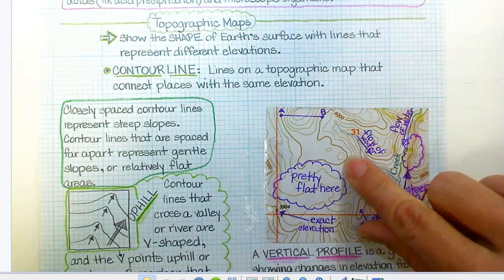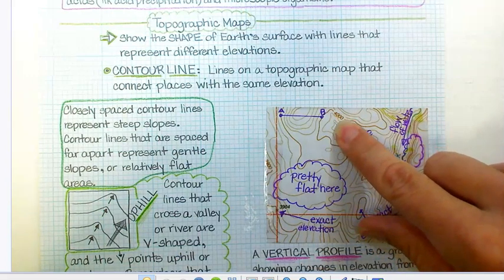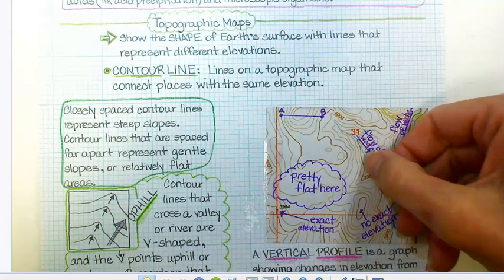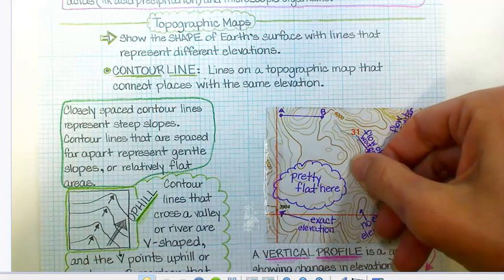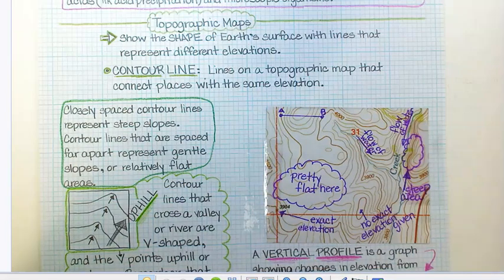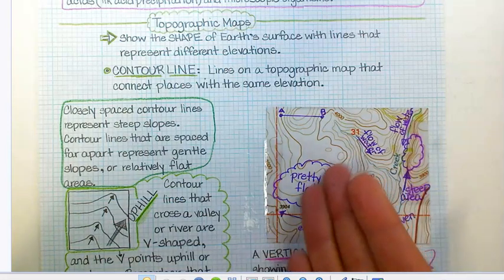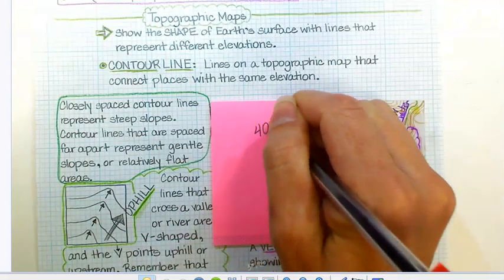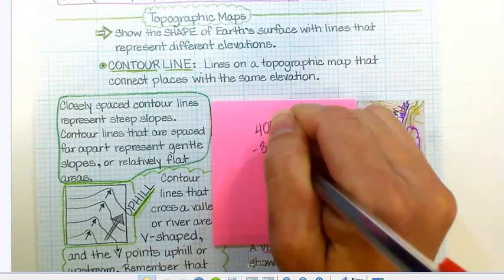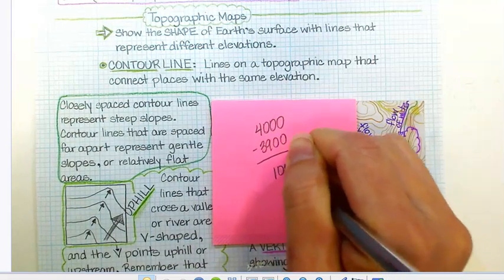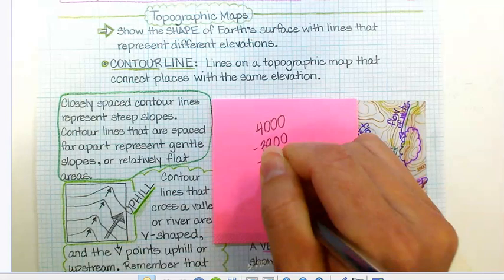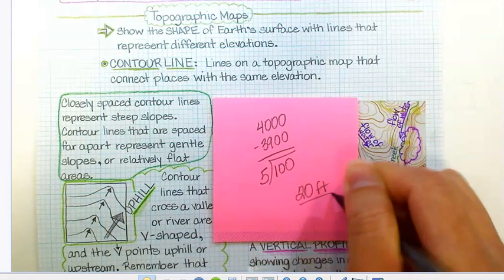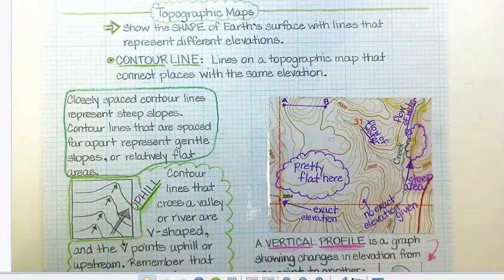If I go over to this next dark contour line and follow it around, it says 4,000. So this one's 3,900 and this one's 4,000. And I have to hop one, two, three, four, five times to get from 3,900 to 4,000. Well, 3,900 from 4,000, that's 100. And then it took me five hops to get there. So 100 divided by five, the contour interval on this particular map is 20. I'm going to assume it's 20 feet, but it's 20.